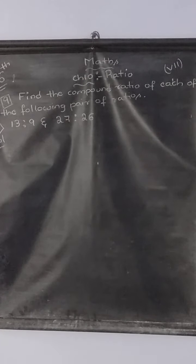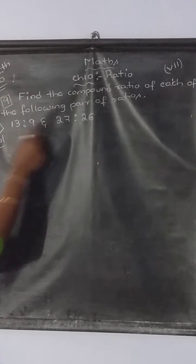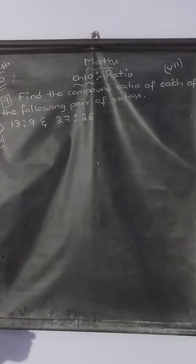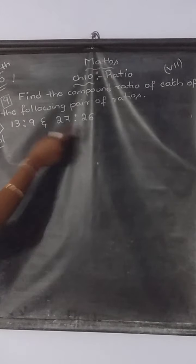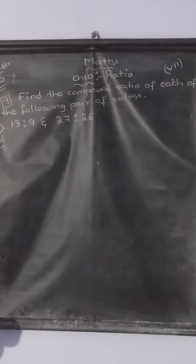What is compound ratio children? Compound ratio of any 2 ratios - the antecedent will be equal to the product of both the ratios' antecedents, and the consequent of compound ratio will be equal to the product of consequents of both the ratios. Now let us find the compound ratio.